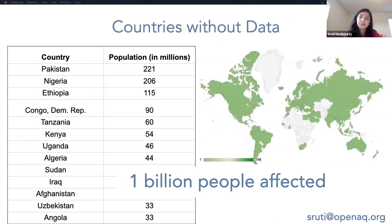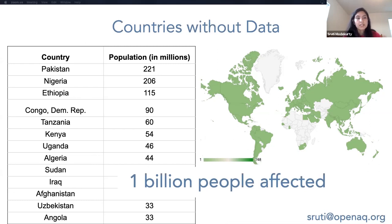And if we look at the other end of the spectrum — countries that don't have data at all — there are 13 countries where just adding data would affect a billion people. If you map that out, you can see that Africa and Central Asia have the biggest gaps.